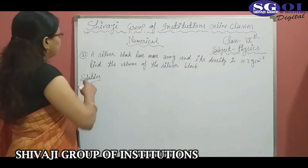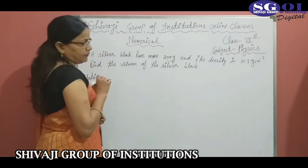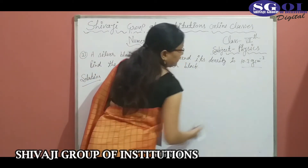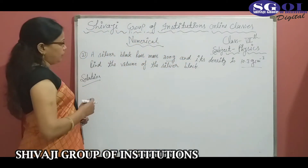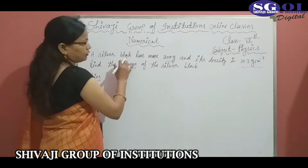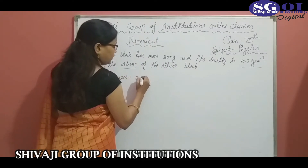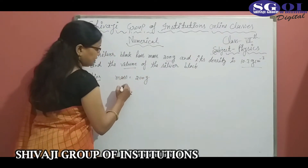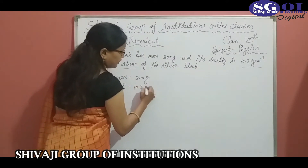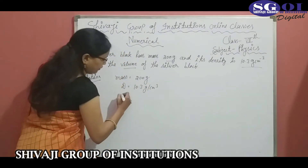Numerical number 3: a silver block has a mass of 200 gram and its density is 10.3 gram per cm³. Find the volume of the silver block. In this question, mass is 200 gram and density is 10.3 gram per cm³, and we have to find out volume.